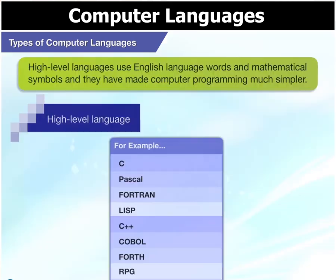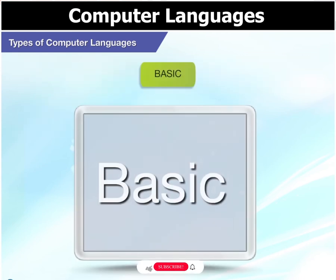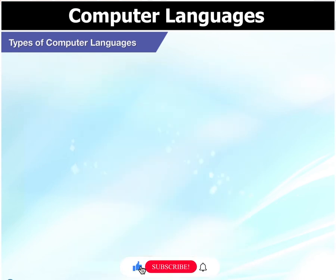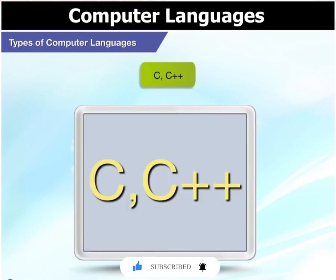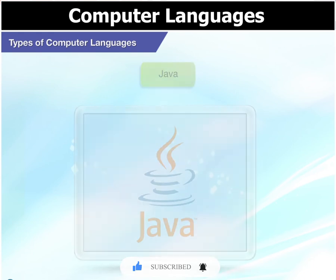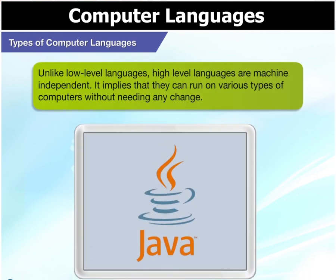What makes high-level languages different? High-level languages use English language words and mathematical symbols, and they have made computer programming much simpler. Some examples of high-level languages are BASIC, COBOL, FORTRAN, C, C++, and Java. An important point is that unlike low-level languages, high-level languages are machine independent.